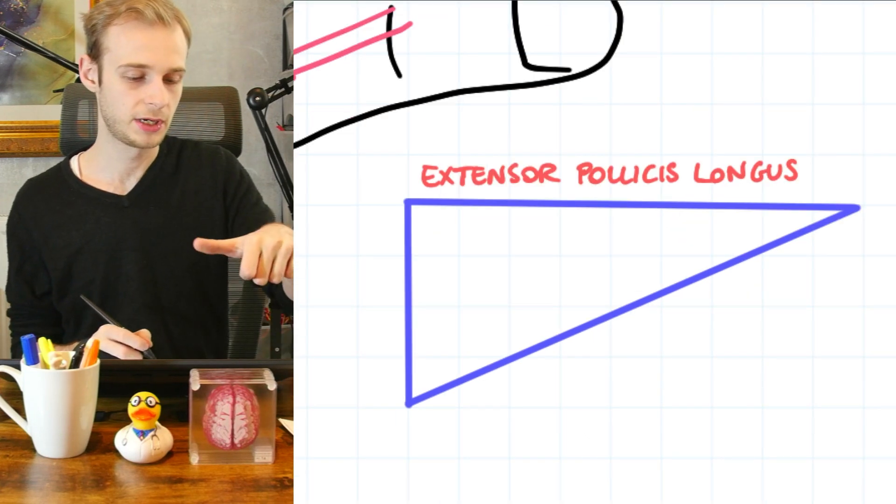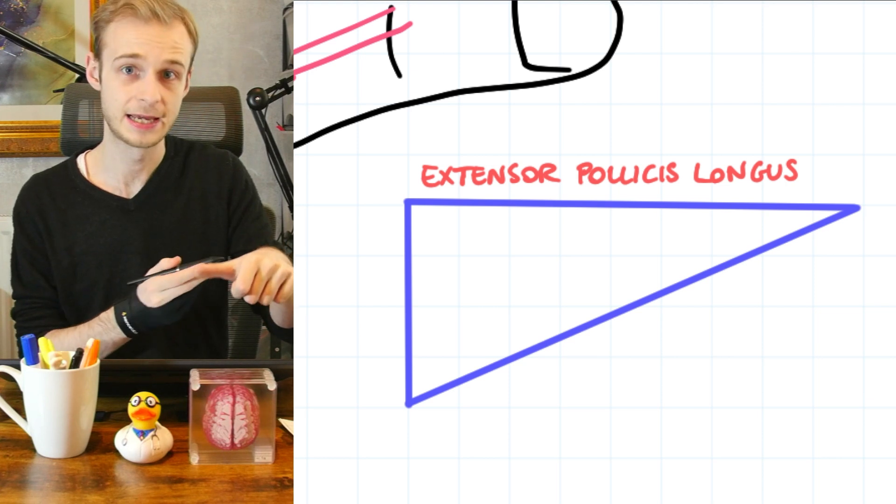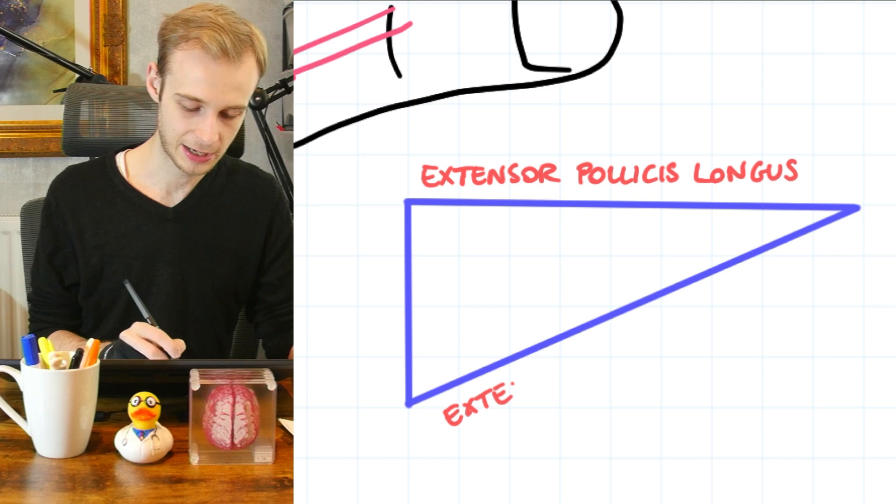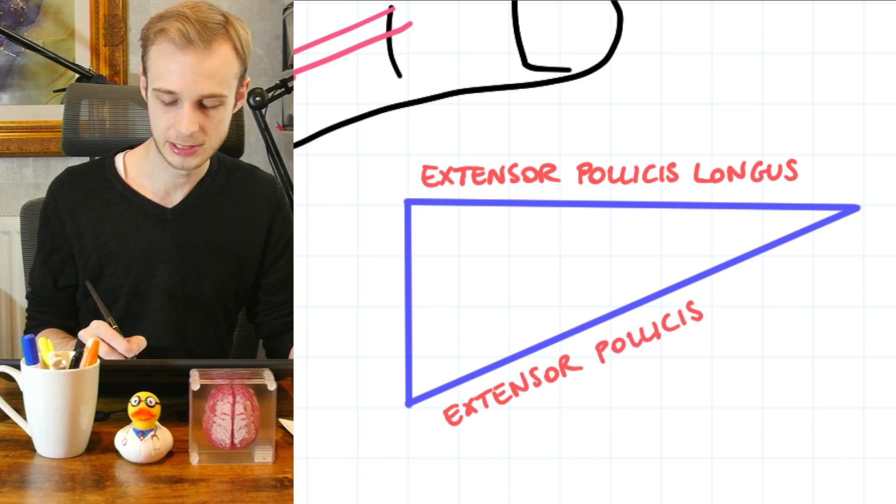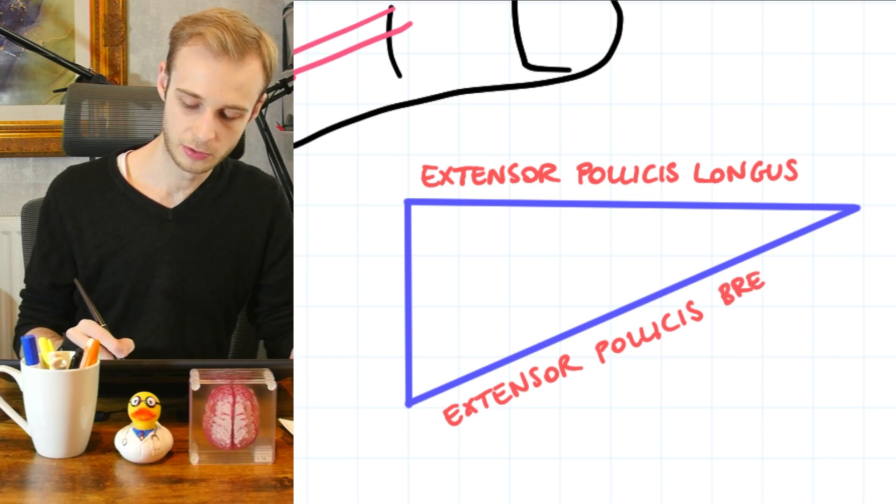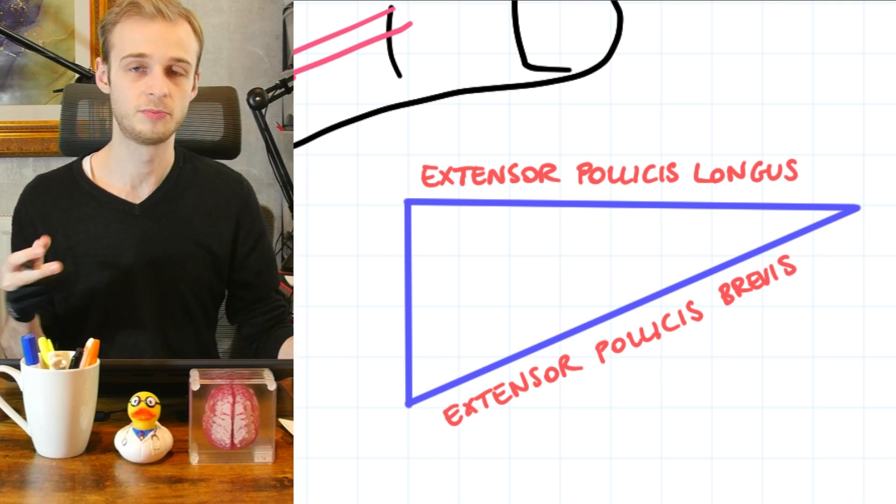How about the inferior border? Well, again, looking at our thumb, when we extend it, we've got this second tendon that pops up at the bottom. So as you might expect from the name, it's another extensor pollicis muscle, a muscle that extends the thumb. But since we've already used longus this time, this time it's brevis or brief.